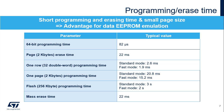To program one page, or 2 kilobytes, 20.8 milliseconds are needed in standard mode and 15.2 milliseconds in fast mode. For the complete flash memory to be erased, it requires 2 seconds in fast mode. The page erase time is 22 milliseconds, and it also requires only 22 milliseconds to erase the complete flash memory. The short programming and erase time, plus the small page size, make it convenient for data EEPROM emulation.